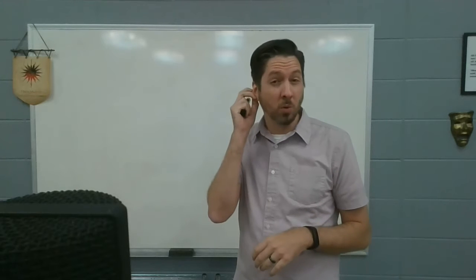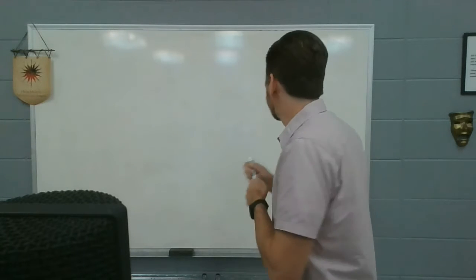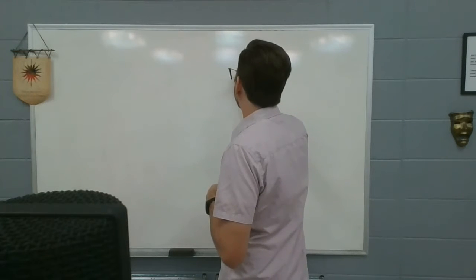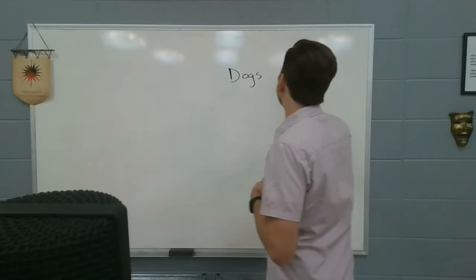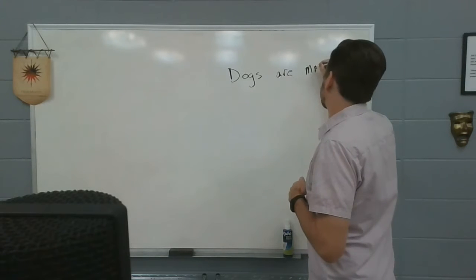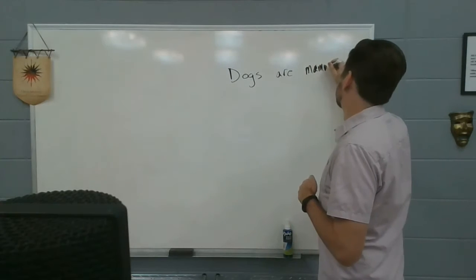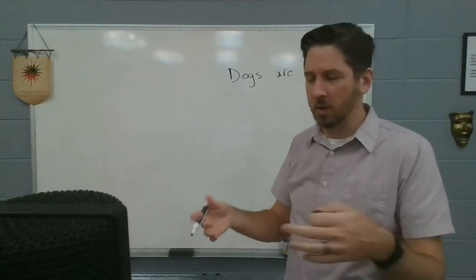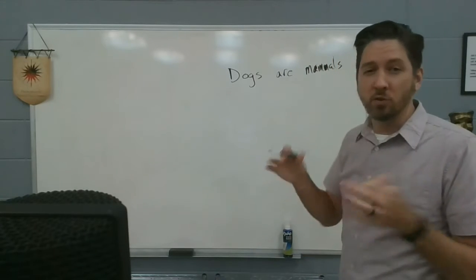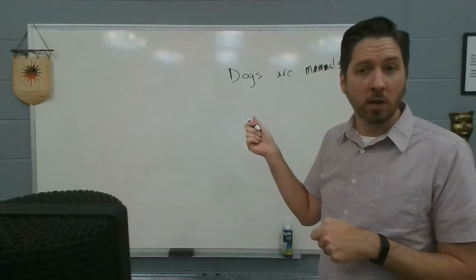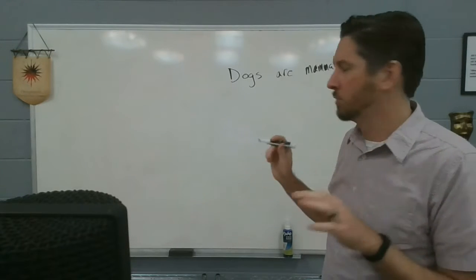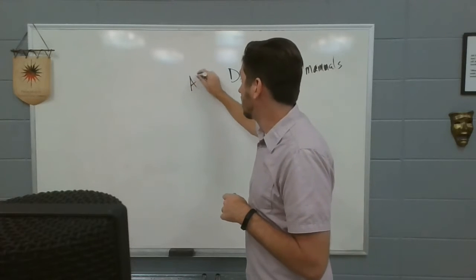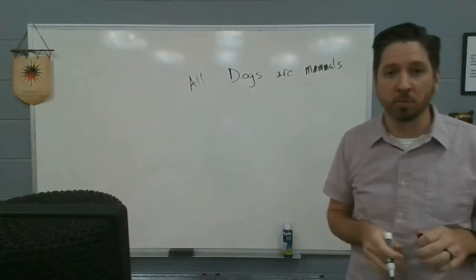One of the tricky ones is the word all. I could say dogs are mammals, right? This is a true statement, we know that dogs are mammals, no big deal. What you don't see there is the word all. It's kind of like in algebra when sometimes numbers are hiding. When I say dogs are mammals I'm saying that all of them are. All dogs are mammals.